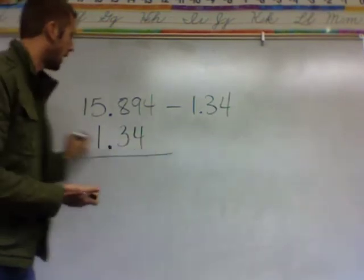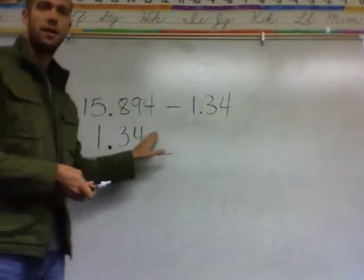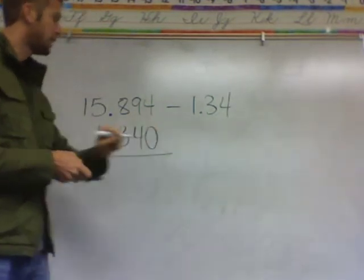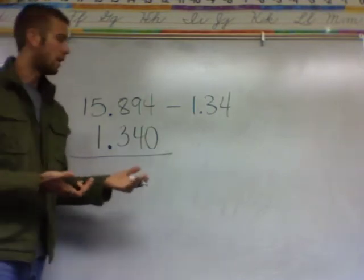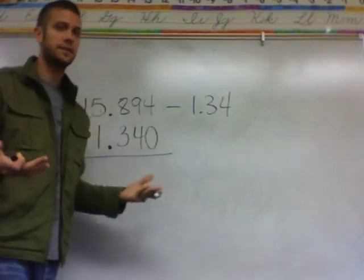We're going to subtract. Now it looks kind of funny because there's no number here on the end. Well, just put a zero there because it does not change the value of 1 and 34 hundredths. Now it's 1 and 340 thousandths, it's the same thing.